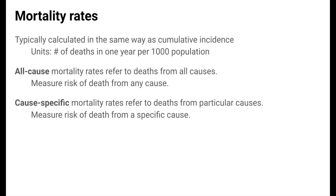One measure of mortality is the mortality rate. Mortality rates are typically calculated in the same way as cumulative incidence — that is, reported in units of number of deaths in a certain time span, say one year, per number of people, say 1,000 population. All-cause mortality rates measure risk of death from any cause, and cause-specific mortality rates measure risk of death from a specific cause.